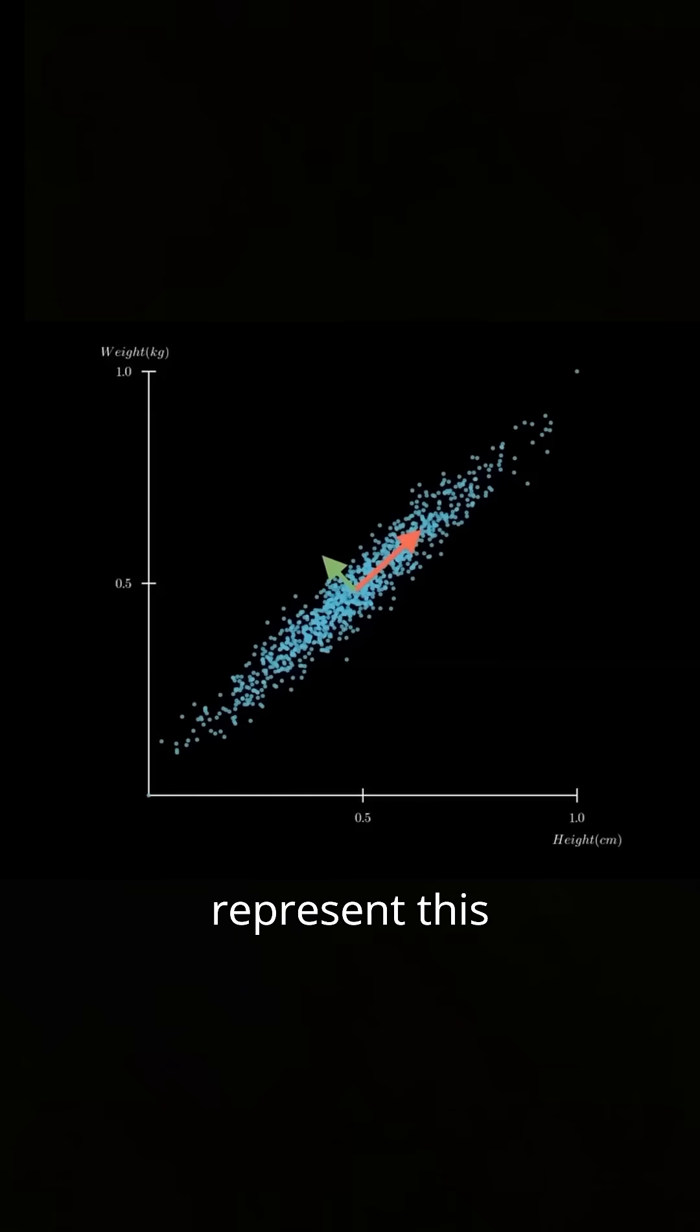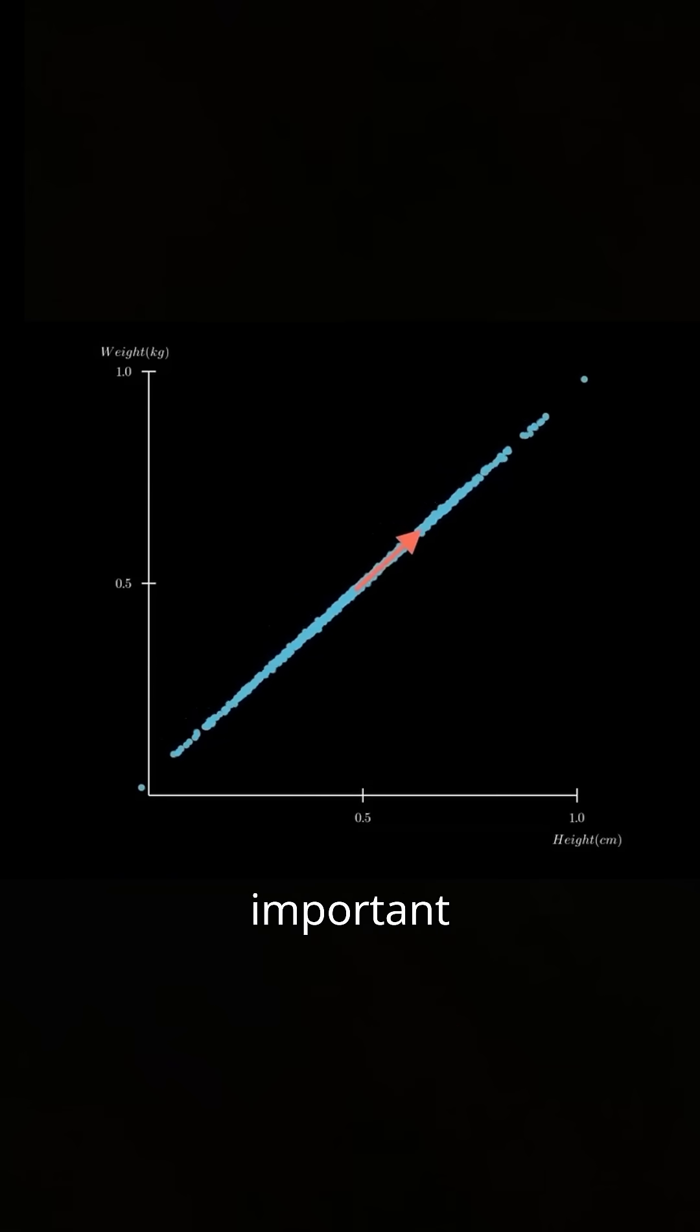Now, what if we want to represent this 2D data on a single axis? Simple. We project the data onto the red arrow, creating a 1D representation that preserves the most important information.